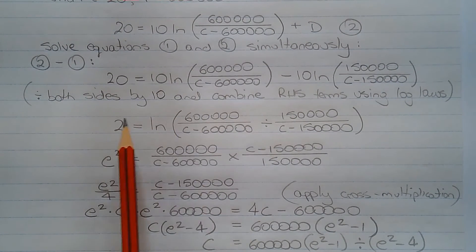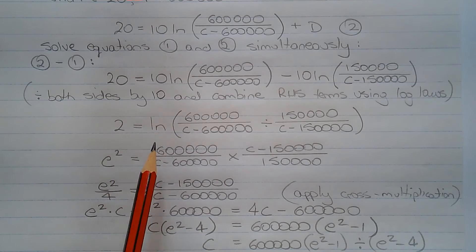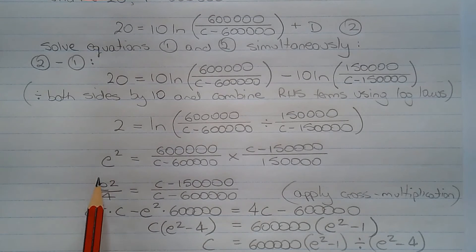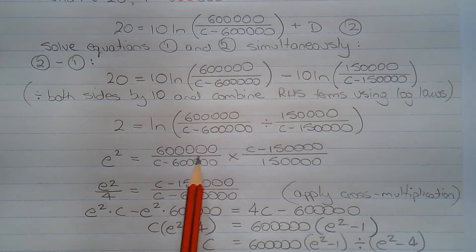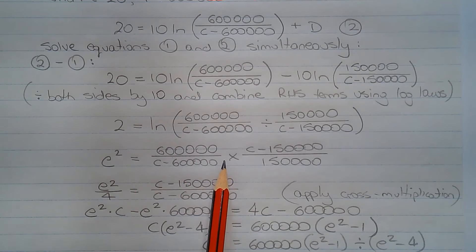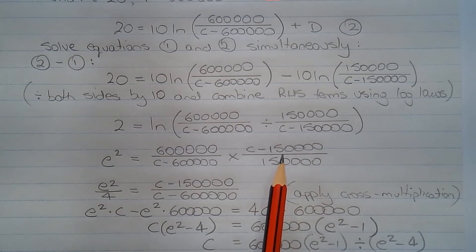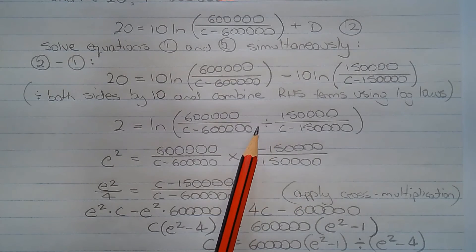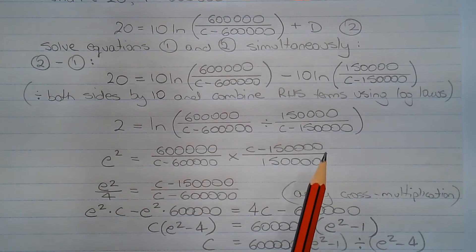Now raising both sides of the equation to the base e to eliminate the ln, we have e squared equals 600,000 over (c minus 600,000) multiplied by (c minus 150,000) over 150,000. So I've changed the division into a multiplication and took the reciprocal of the second fraction.